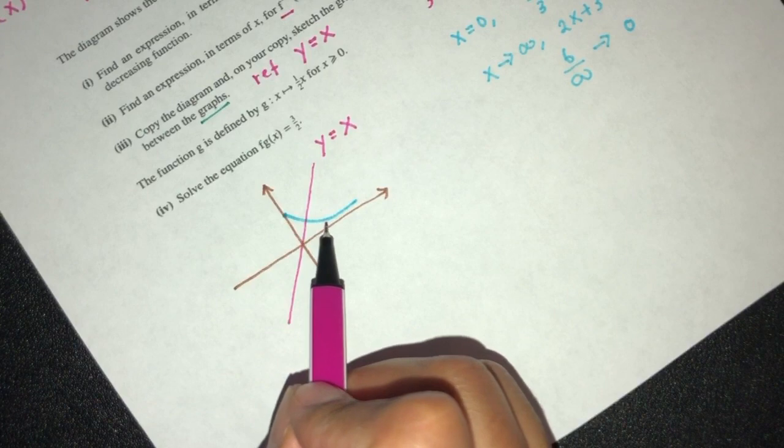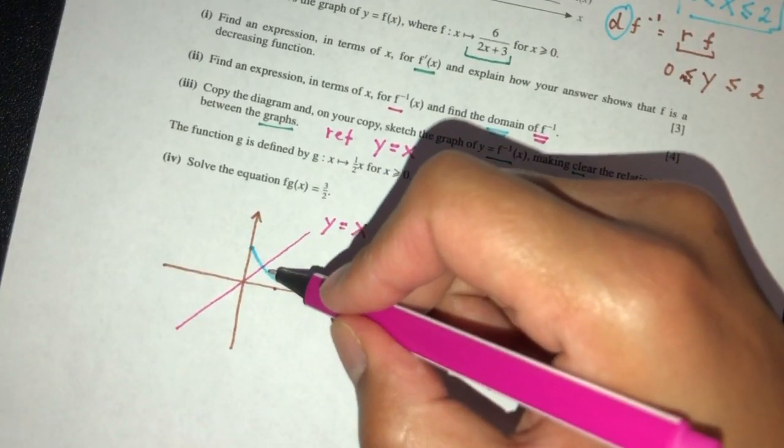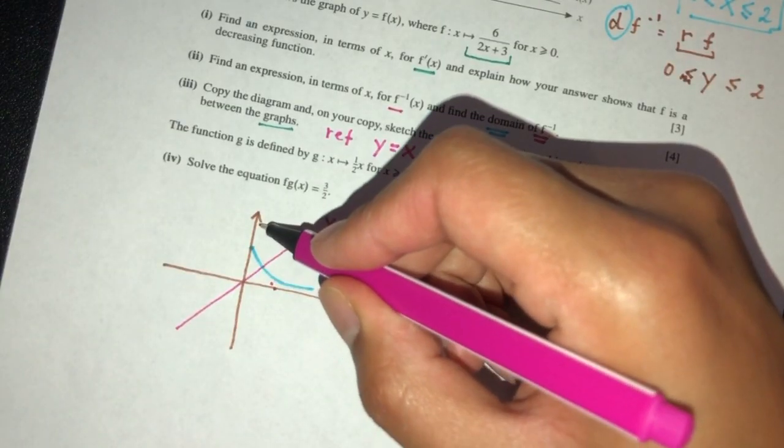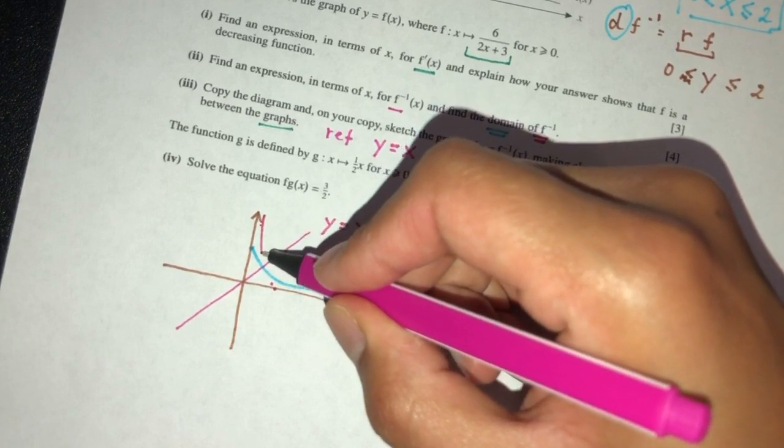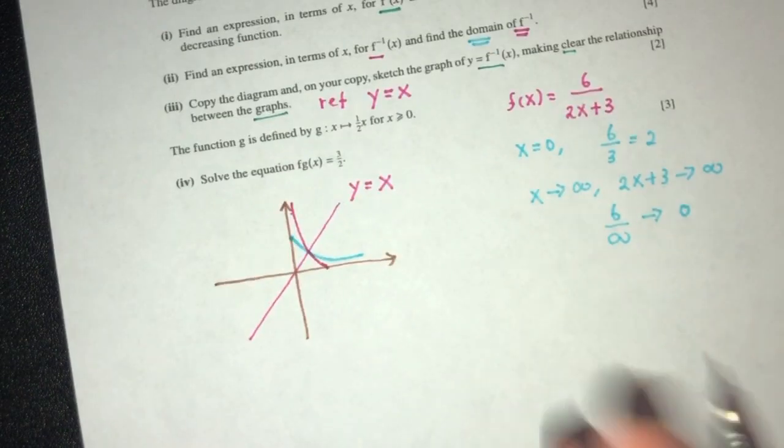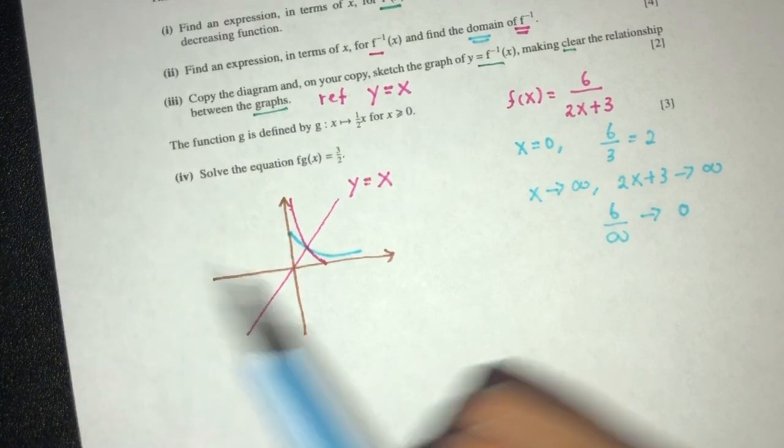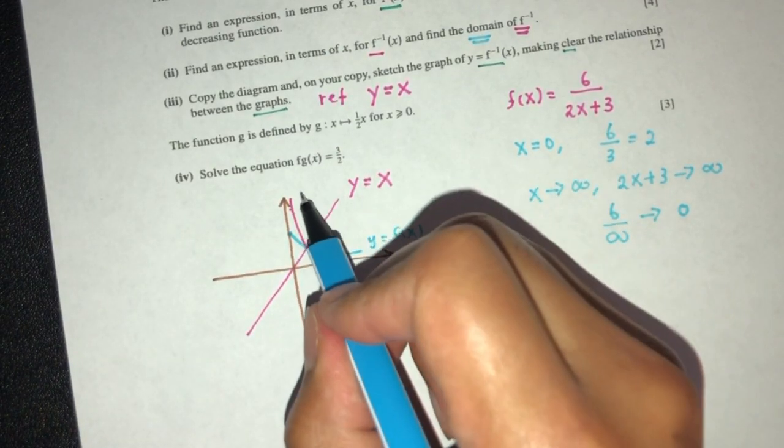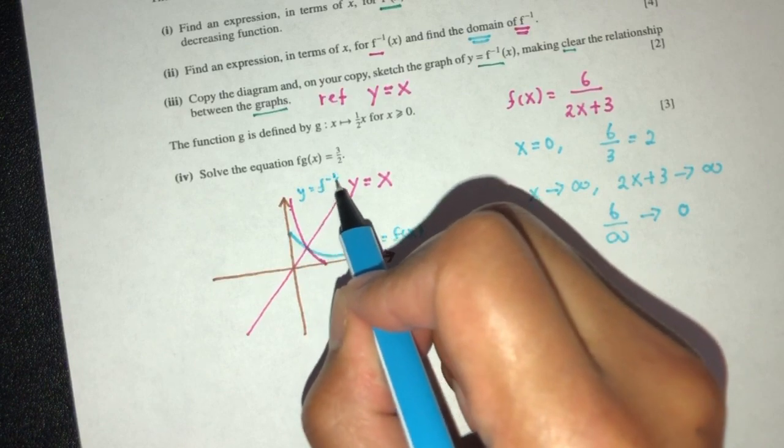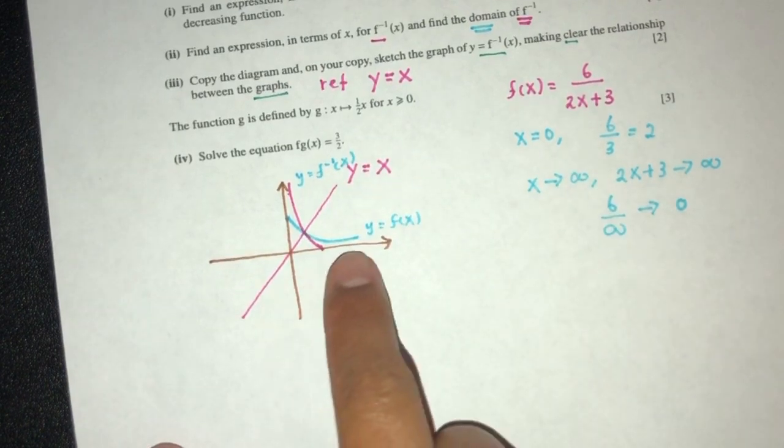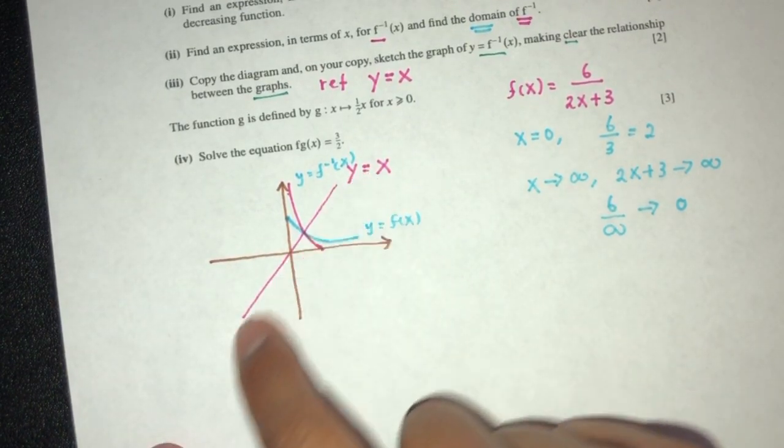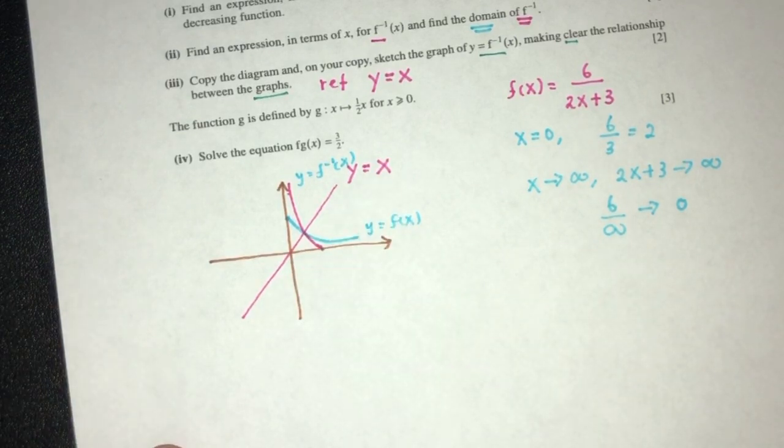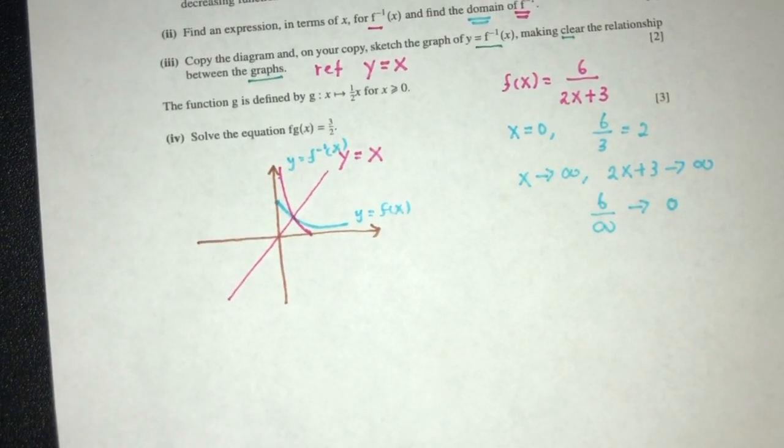This is the point over here, and you create the reflection. Label this as y equals f of x. This is y equals f inverse of x. This is the relationship, which is a reflection in the line y equals x. It is always going to be that case.